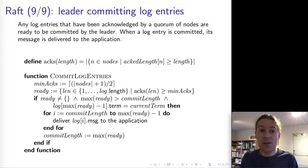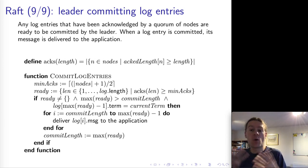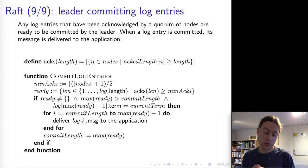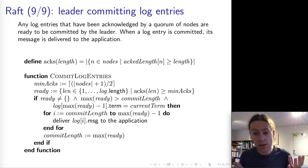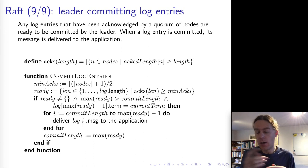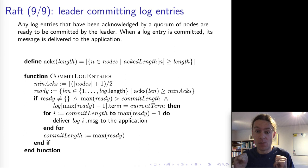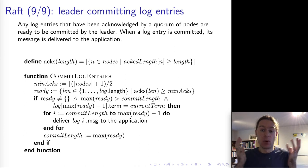And that gives us total order broadcast in a way that is fault tolerant — it still works as long as a quorum of nodes is alive and able to respond to requests, and it is safe. Even if weird timing behavior happens and you get a couple of leader elections, the algorithm always guarantees that all nodes will deliver the same sequence of messages in the same order. Even though it's a rather complex algorithm, it is also a very interesting one.